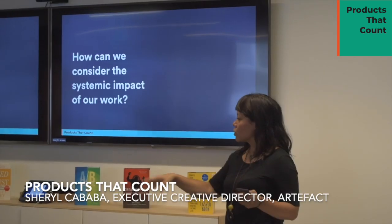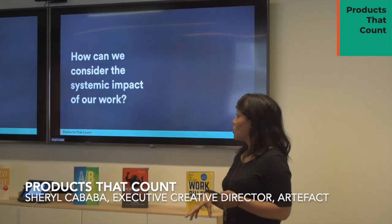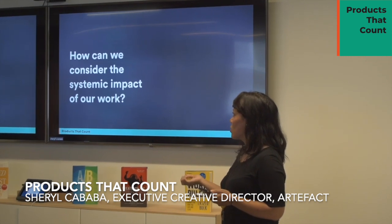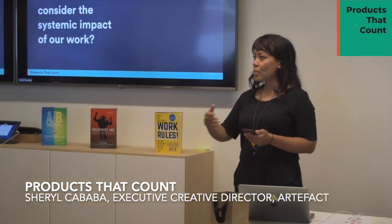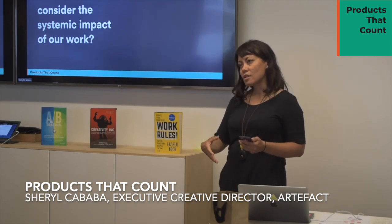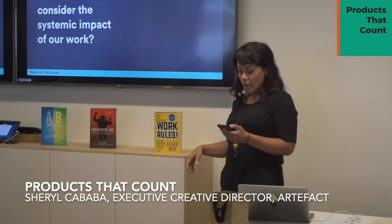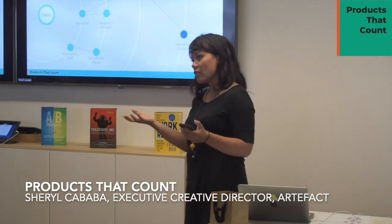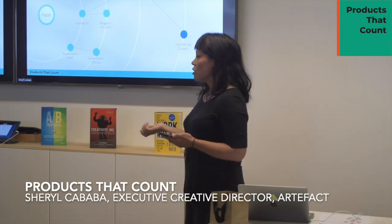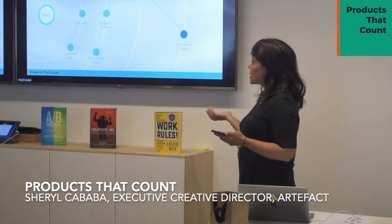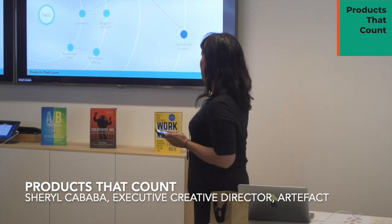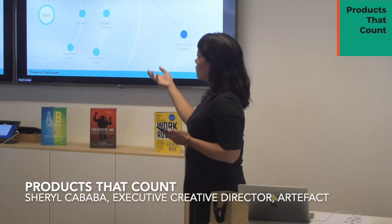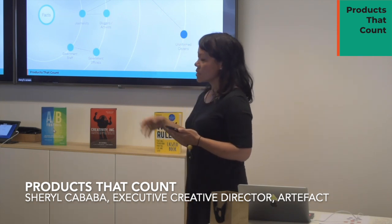We can definitely learn from other disciplines and apply to our own work. Even though we've been doing this with tools directly related to product design, I was wondering how we can consider the systemic impact of our work — what about stakeholders and effects a few degrees past the users or the context our products and services are used in. Many of us use systems thinking in different ways; for example, we do stakeholder mapping. This is a map I created for a client who built a public data platform.